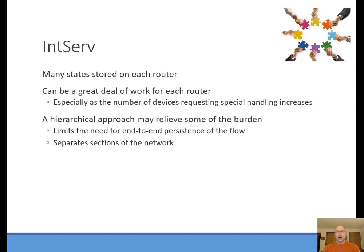The problem alluded to earlier is that there are many states on each router. With provisioned QoS you just have the class maps, policy maps, and service policies — that's it, those are the states the router knows about. But what if you have a thousand VoIP phones, all trying to signal into the network what they want for QoS provisioning? The router has to remember all of those states for every one of those nodes, and each node might have more than one — say a VoIP application and another application that also requires provisioning. That's the big problem with integrated services.